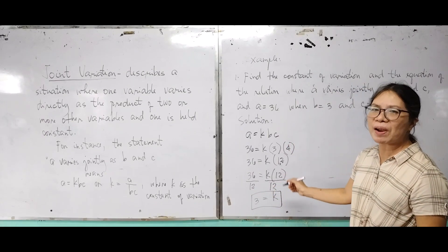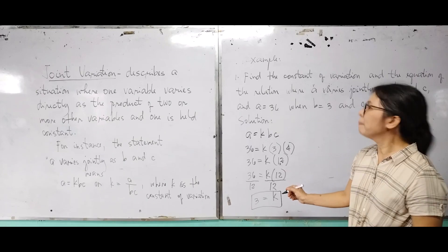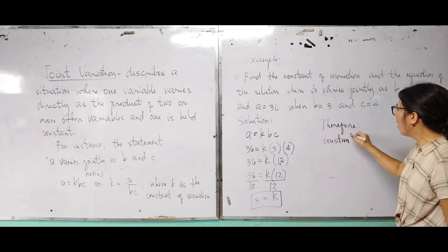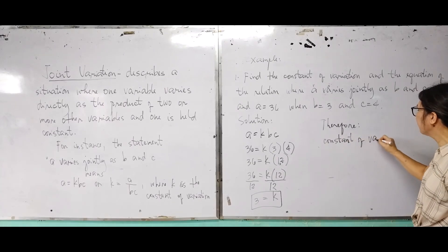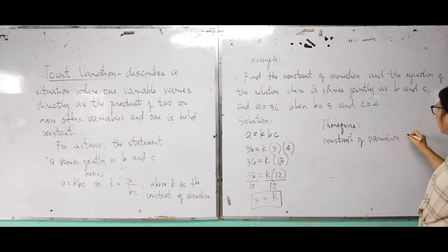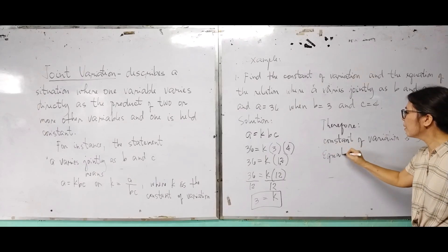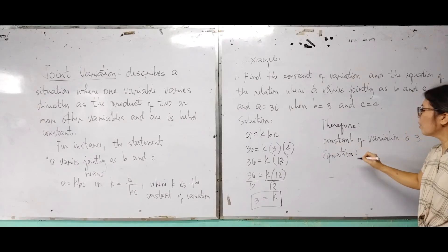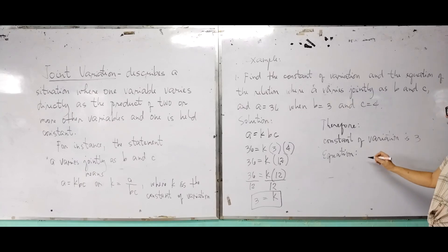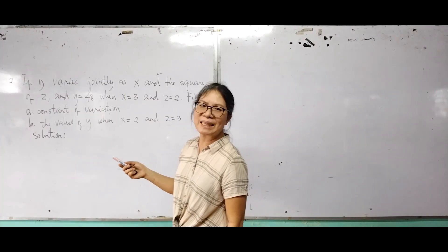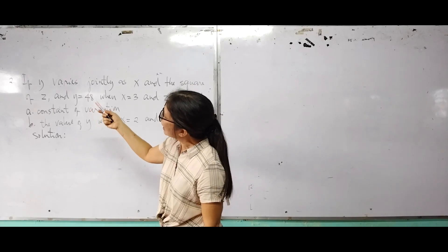So our K, which is the constant of variation, is 3. Therefore, our constant of variation is 3, and our equation is A equals 3BC.